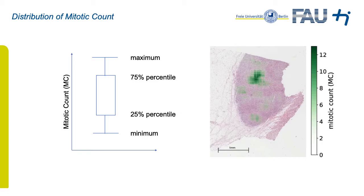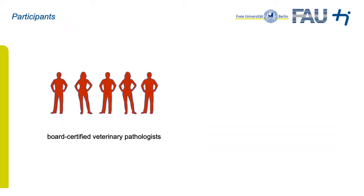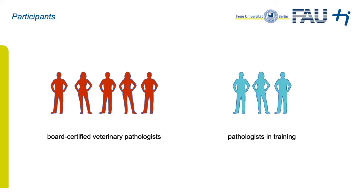For each slide, we can also look at the distribution of mitotic count, displayed here as a box plot indicating the first and third quartile and the minimum and maximum. Given a position selected by an expert, we can look up in the map how good or bad the expert was. We had five board-certified veterinary pathologists and three veterinary pathologists in training participating in our study.